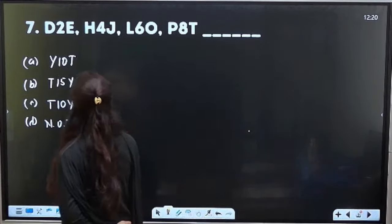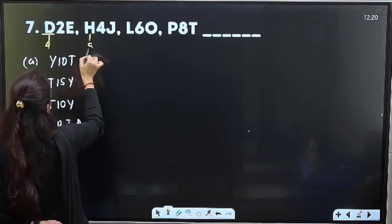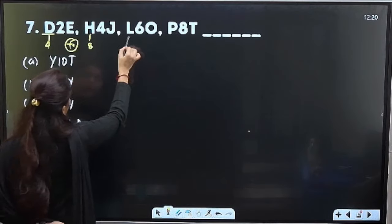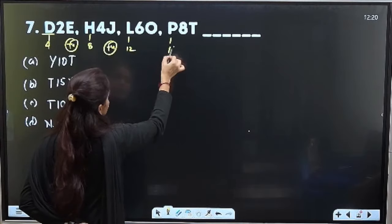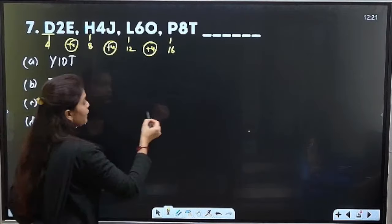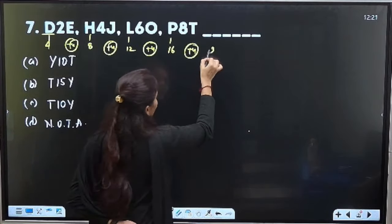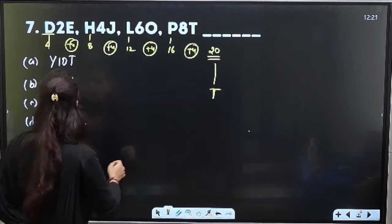So see here, D idhe, D is fourth letter, H is eighth letter. EFGH, right? Plus four add agathe. L is twelfth letter, plus four add agathe. P is sixteenth letter, means plus four add agathe. Next, plus four add agathe, 16 ke 20 barathe, so 20th letter yahu dhu, T.